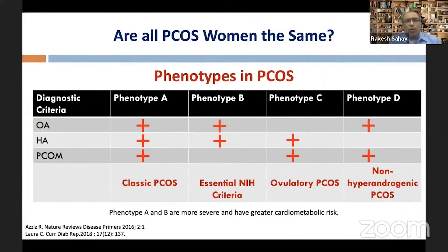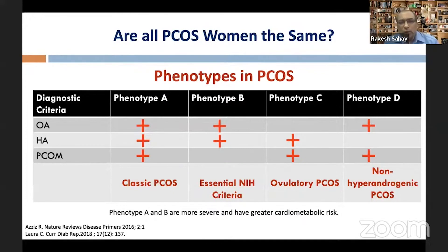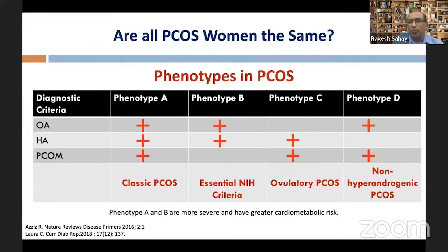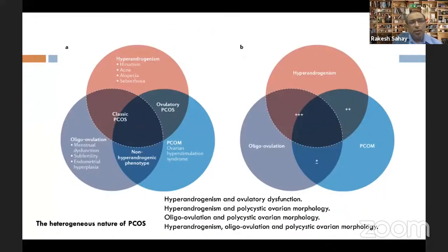Based on these diagnostic criteria, we recognize four different PCOS phenotypes. Phenotype A (classic) has all three components — oligo-anovulation, hyperandrogenism, and PCO morphology. Phenotype B fulfills the NIH criteria — oligo-anovulation and hyperandrogenemia. Phenotype C is the ovulatory phenotype — PCO morphology and hyperandrogenemia. Phenotype D presents without significant hyperandrogenemia. The classical phenotypes A and B carry a greater cardiometabolic risk compared to phenotypes C and D.